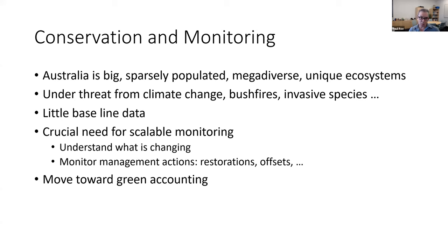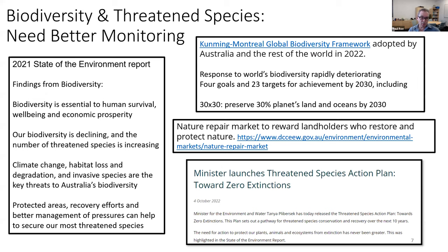In common with a lot of places, we're moving towards green accounting. In Australia there have been reports about threatened species and biodiversity pressures, and legislation coming in to better protect threatened species — the so-called nature repair market. This is all happening within the context of the Montreal Global Biodiversity Framework. Australia and the US both signed up to that, so there are a number of targets around protecting biodiversity which we need to address.